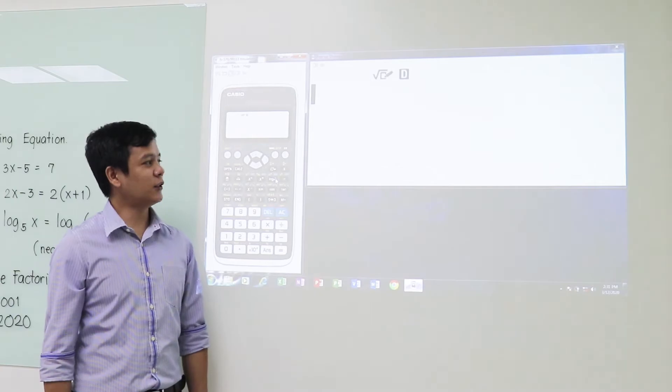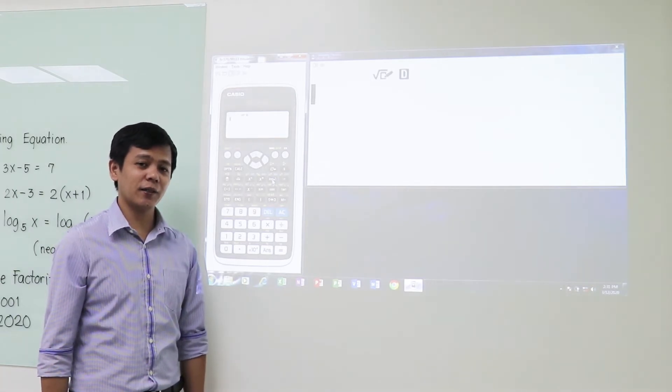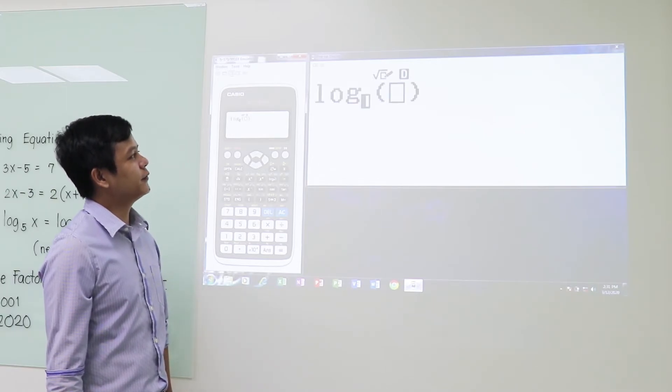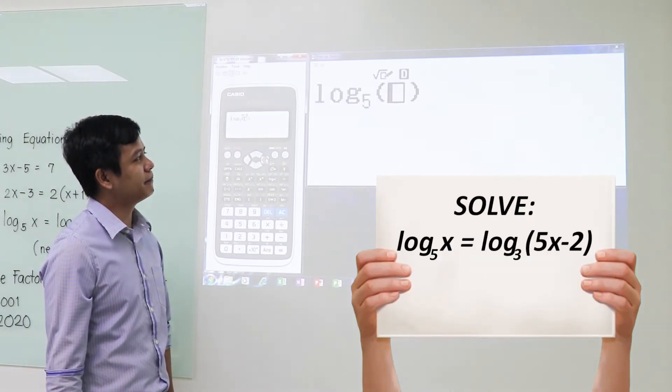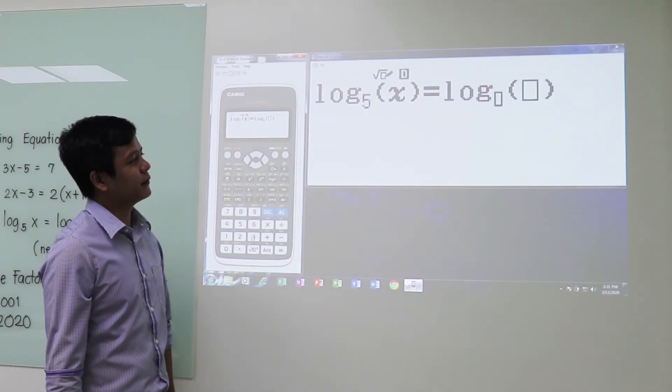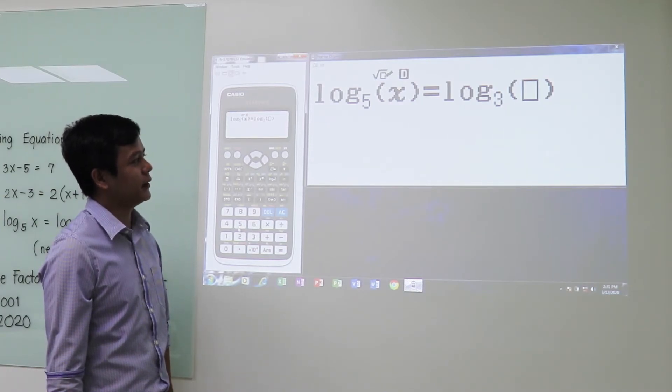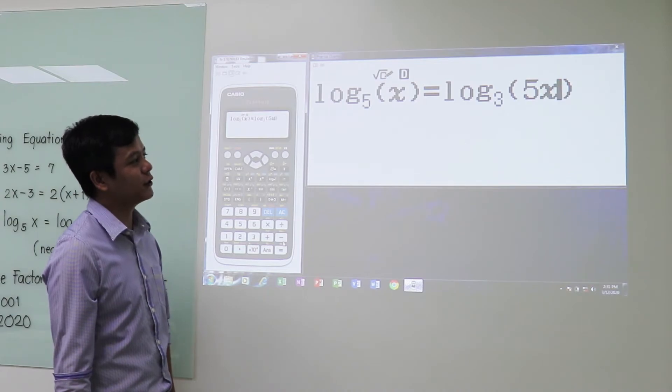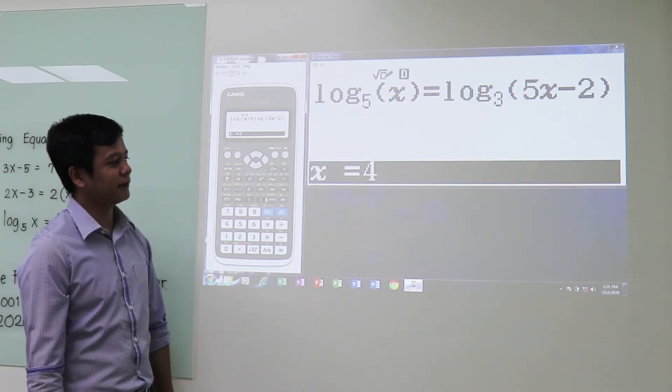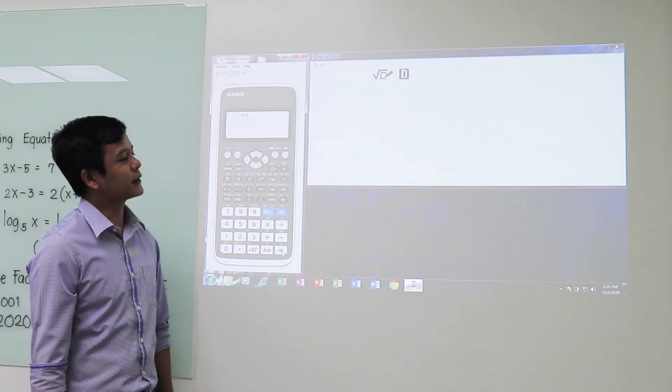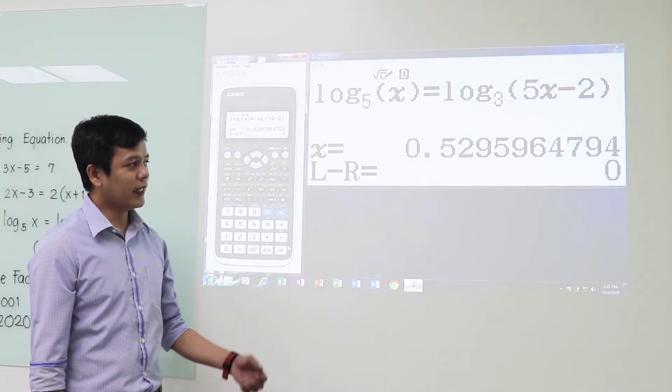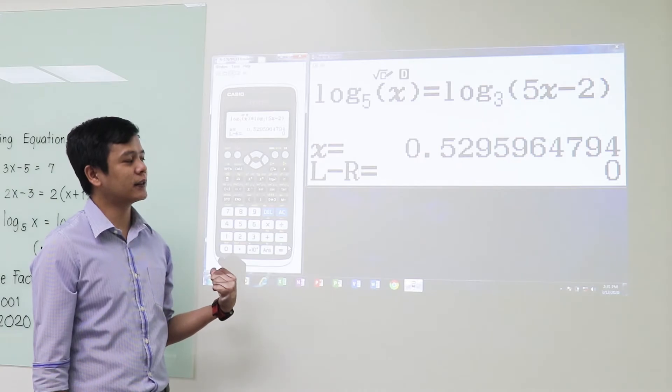Okay, we shall now proceed to problem number three. It is about the logarithmic equation. So let's input the equation: the logarithm of x to the base 5 is equal to the logarithm of the quantity x plus 1 to the base 3. I'm sorry, 5x minus 2 to the base 3. Then shift calc, then equals.